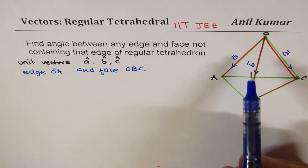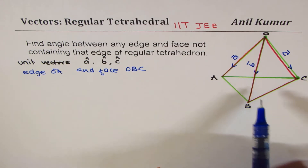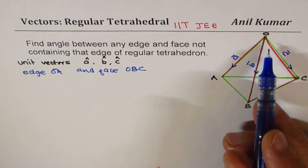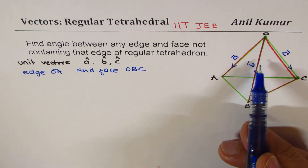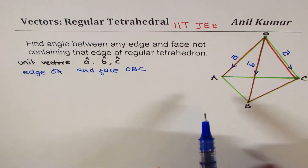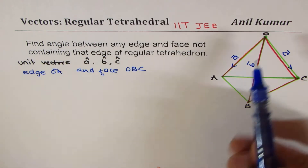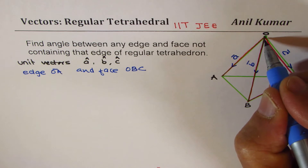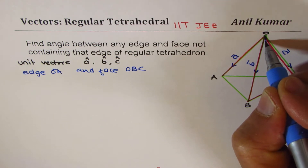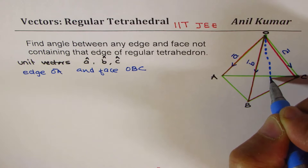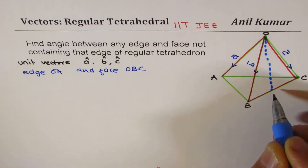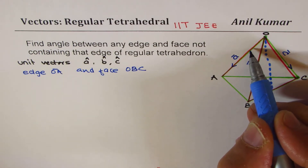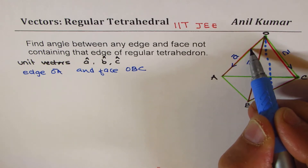In a tetrahedron, all angles are 60 degrees — they are all equilateral triangles, so all angles like between AC and AB are 60 degrees. When we find the angle between edge OA and face OBC, we need to check the center line going through the face, which is the angle bisector at O. The angle we are interested in is between that bisector line and the edge OA.